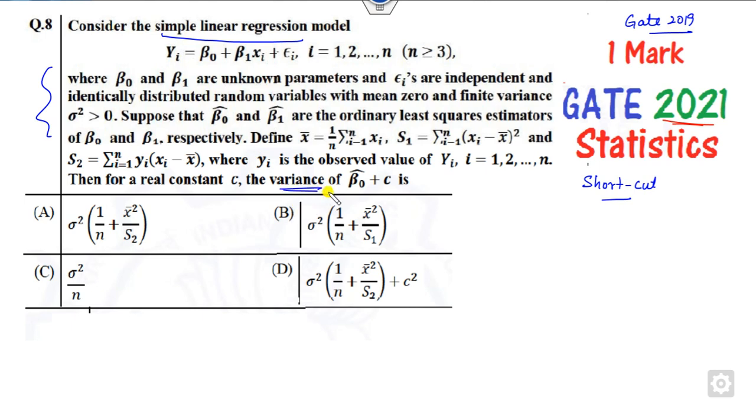You have to find the variance of the estimation of beta and c, where c is a constant. All of us know that variance of a constant value is zero, so it means my target is to find here. This option is cancelled out. Now, how can you find the variance of this beta₀?